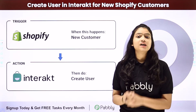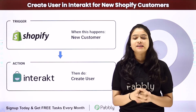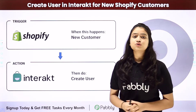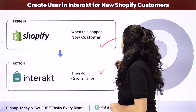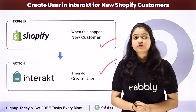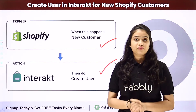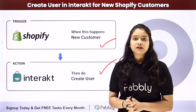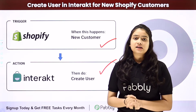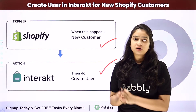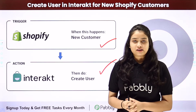To do the same we are going to use Pabbly Connect, which is an amazing automation and integration software. We have Shopify in our trigger and Interact in our action. We will be connecting both of them using Pabbly Connect in such a way that whenever a new customer is added in our Shopify store, automatically, using the details of the same customer, it will be added as a user in our Interact account.